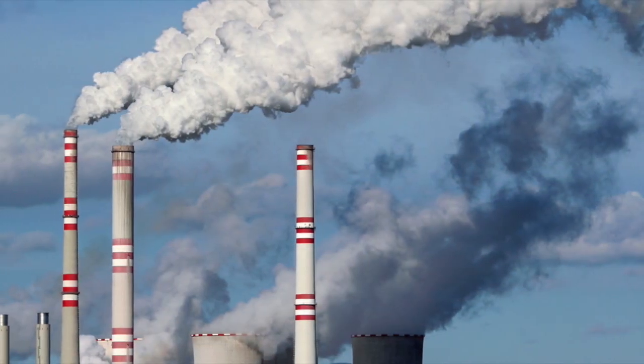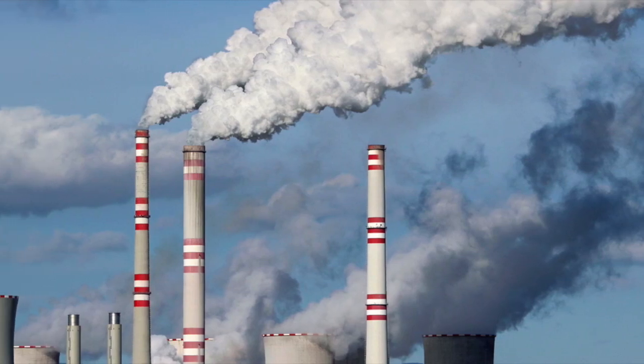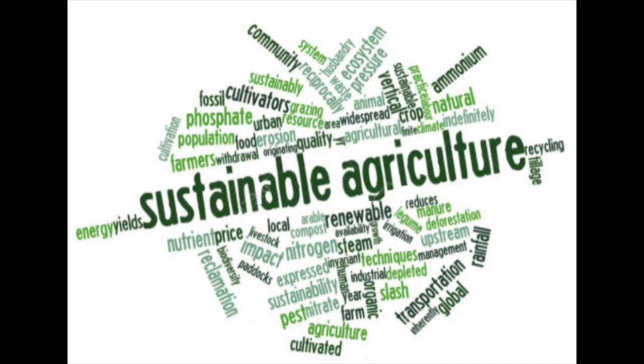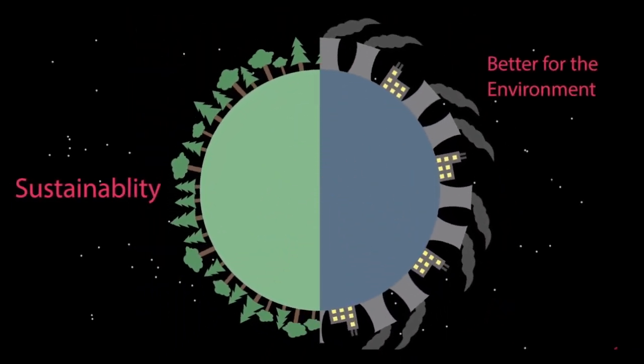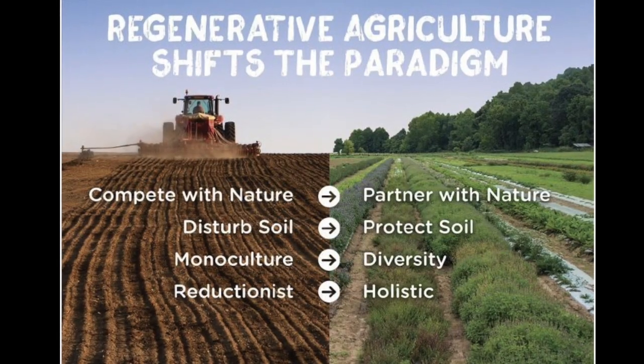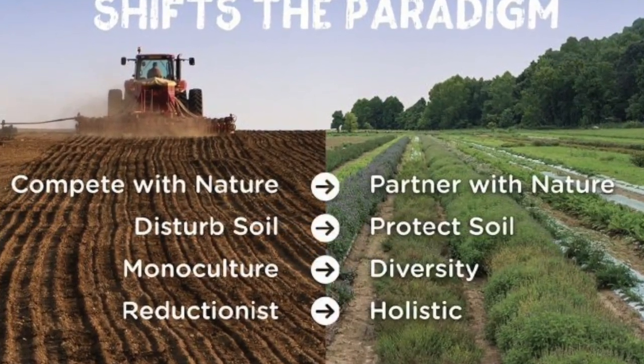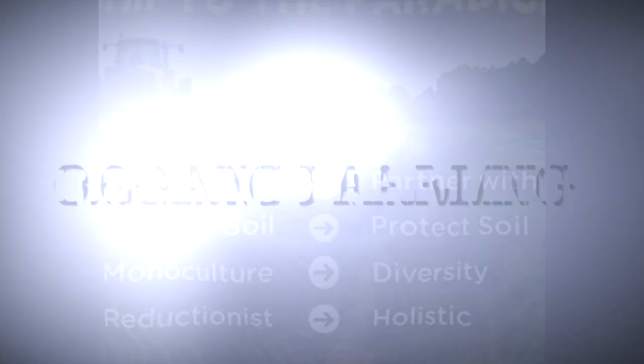Fossil fuels are not only non-renewable, they're also extremely harmful to the environment. A solution: sustainable agriculture. The primary elements of sustainable agriculture are environmental health, economic profitability, and social equality among the stakeholders. Sustainable agriculture is not only diverse — it partners with nature, protects the soil, preserves the natural quality of soil and water resources, and helps in food security.